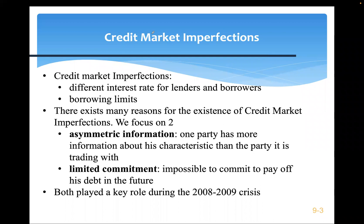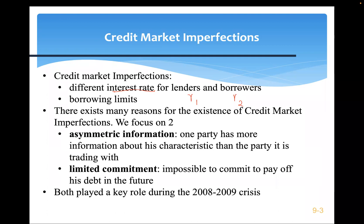Credit market imperfection usually leads to different interest rates for lenders and borrowers. If you deposit money in a bank, you are a lender — you lend your money to the bank and receive rate R1. If you borrow from the bank, you face rate R2, and usually this borrowing rate is higher. In this chapter, I'll explain why borrowing rate is typically higher than the saving rate.